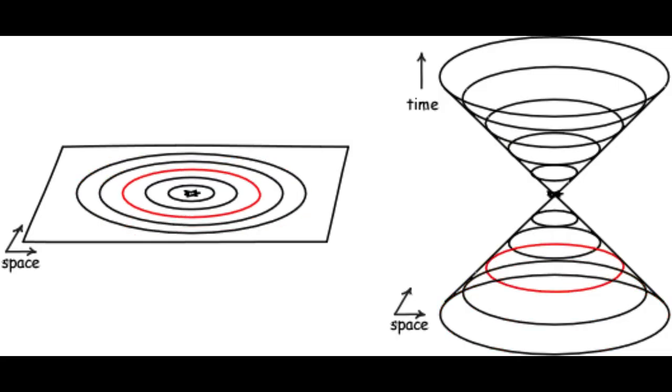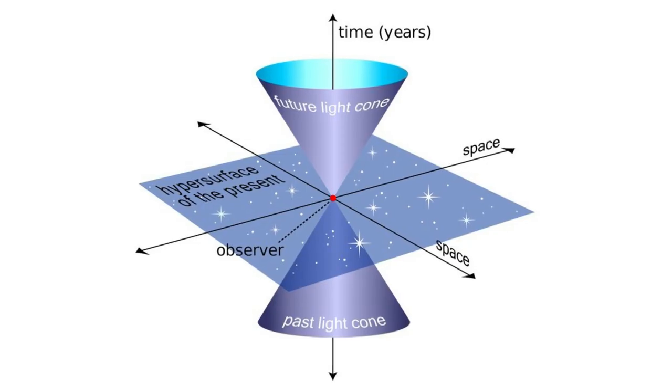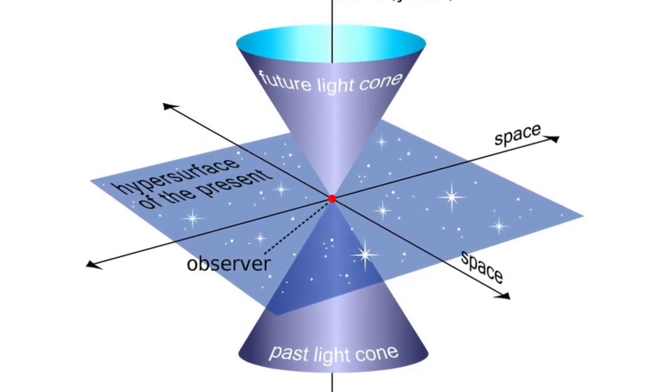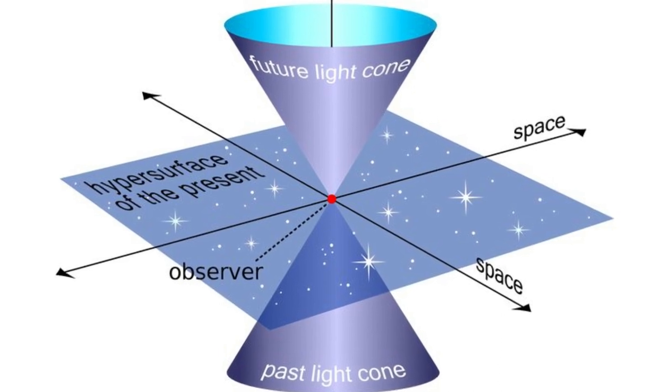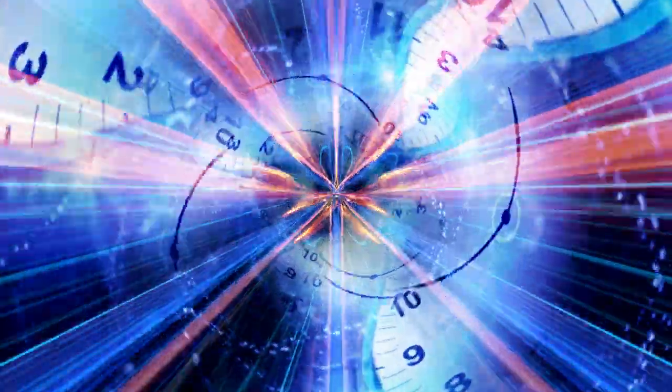The concept of a past light cone is similar to that of a future light cone, but pertains to events in the past that could have influenced a given event at a specific point in space-time. It helps us understand what events in the past might have had an impact on the situation you find yourself in at this moment. These concepts and diagrams help physicists and scientists visualize the relationships between events and the influence of the speed of light on the structure of space-time. Light cones are particularly important for understanding causality and the limits imposed by the finite speed of light in the universe. They provide a powerful tool for conceptualizing the interconnected nature of space and time.